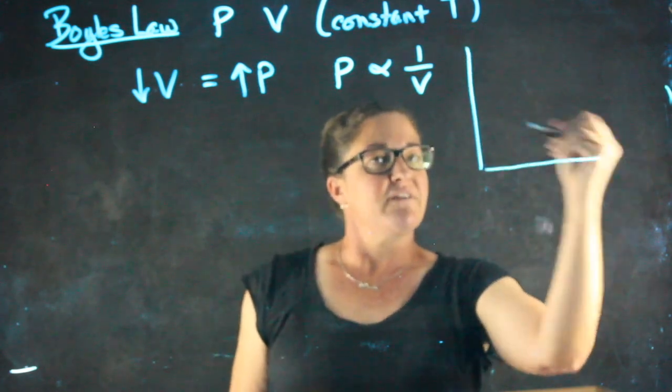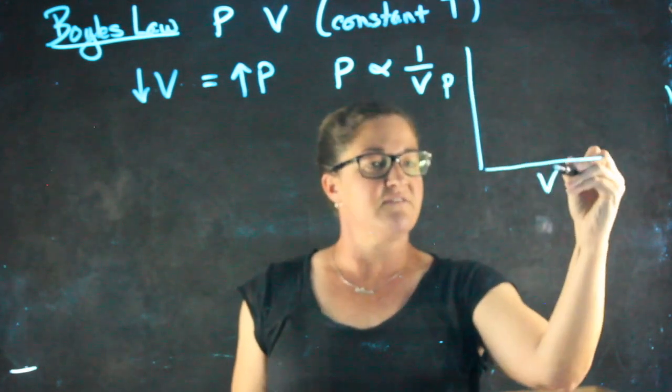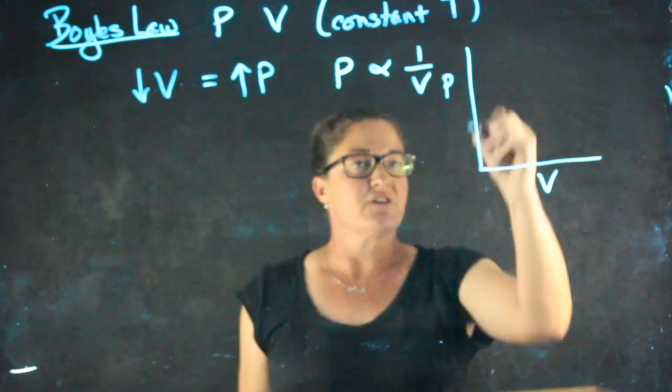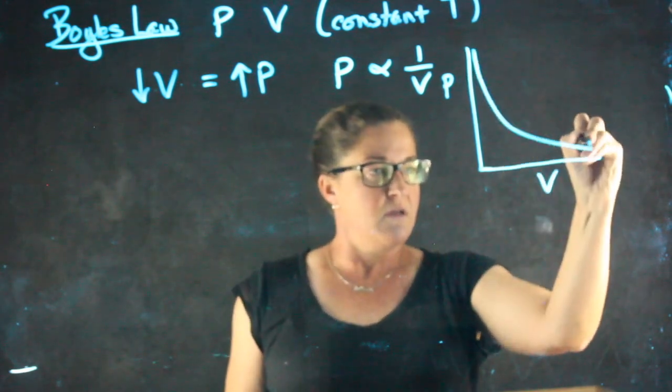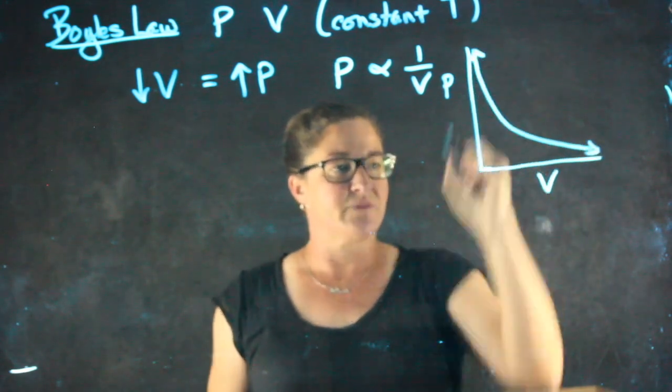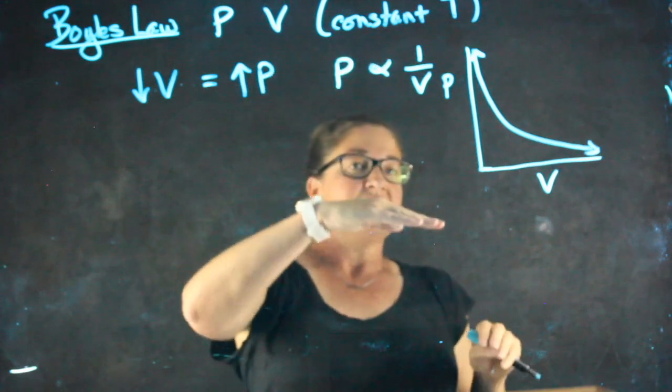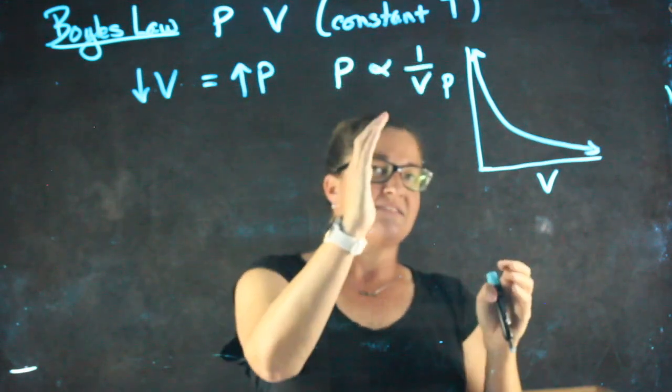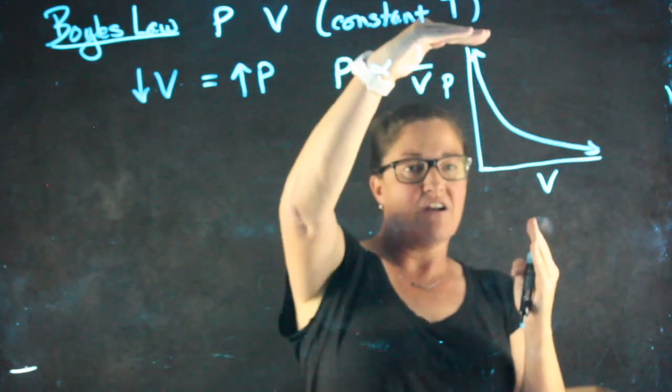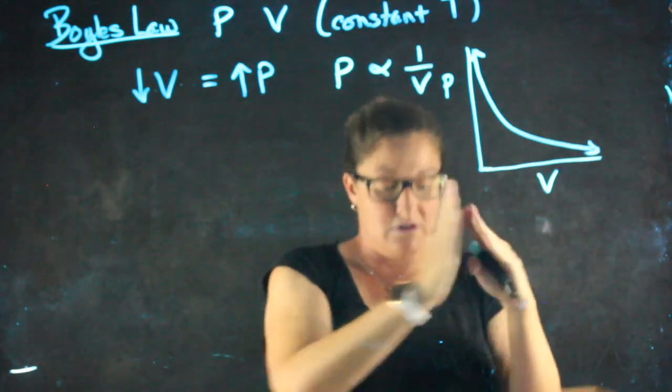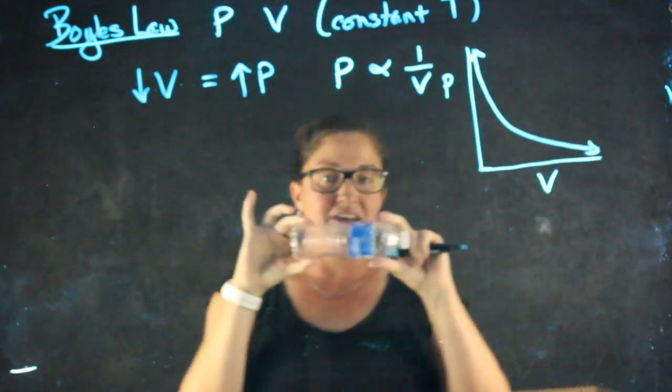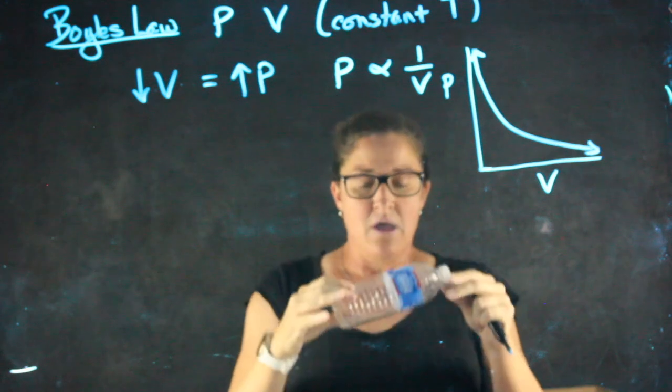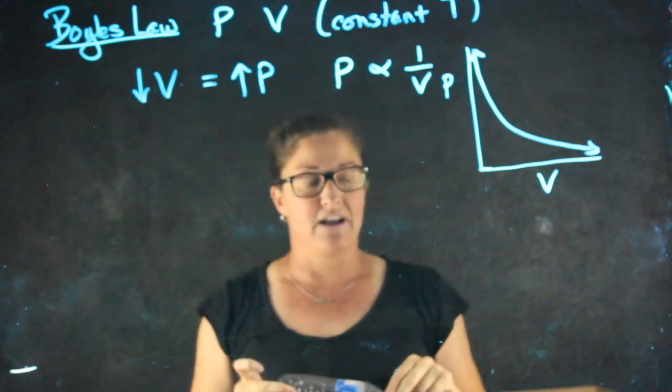If I were looking at it graphically, P versus V, when we have an inverse relationship, the graph looks something like that. So as pressure gets higher and higher, the volume is going to get lower and lower, but I can never get this volume actually to zero because the molecules themselves have a finite volume.